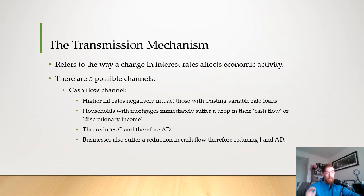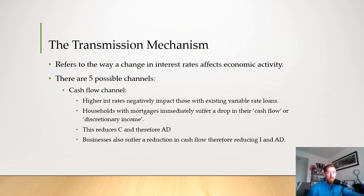Households with mortgages immediately suffer a drop in their cash flow or discretionary income when interest rates increase. For example, if we pay around $1,000 in interest per month and interest rates go up, that repayment would rise, leaving us with less cash available. This reduces private consumption spending and therefore reduces aggregate demand. Businesses also suffer a reduction in cash flow because they have to pay more on their business loans, which reduces private investment spending and aggregate demand as well.